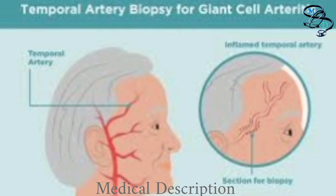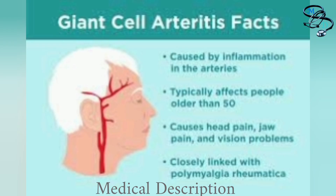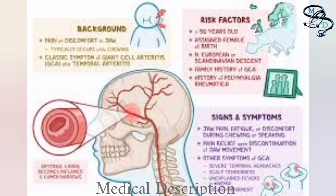The temporal arteries — the blood vessels near the temples which supply blood from the heart to the scalp — are inflamed, swollen, and constricted or narrowed. The vasculitis that causes temporal arthritis can involve other blood vessels such as the posterior ciliary arteries, leading to blindness, or large blood vessels like the aorta and its branches.